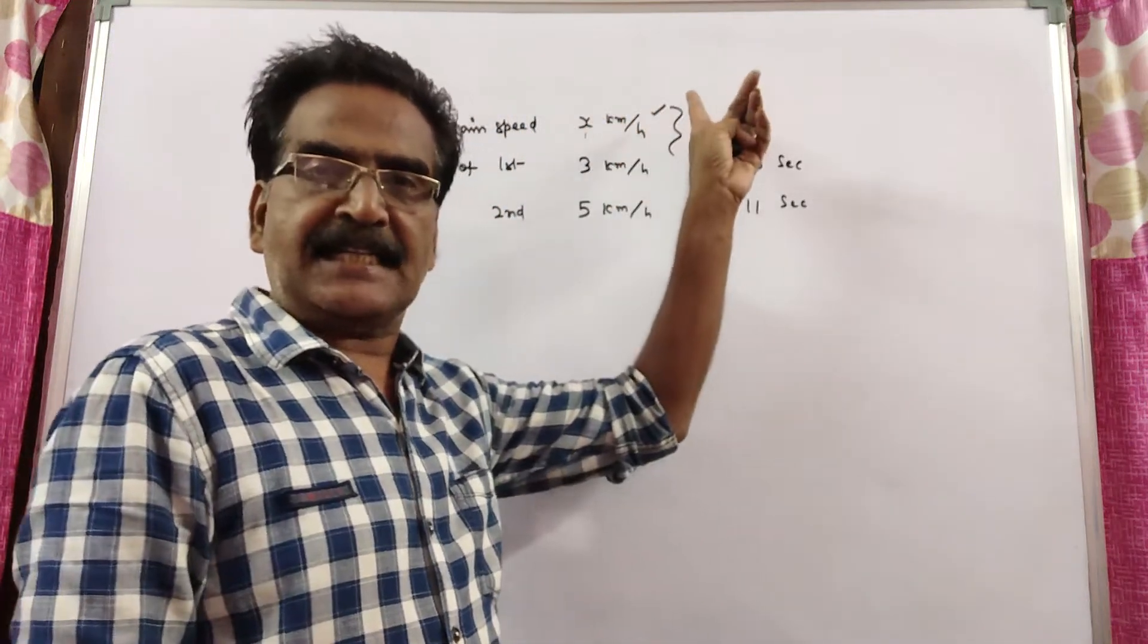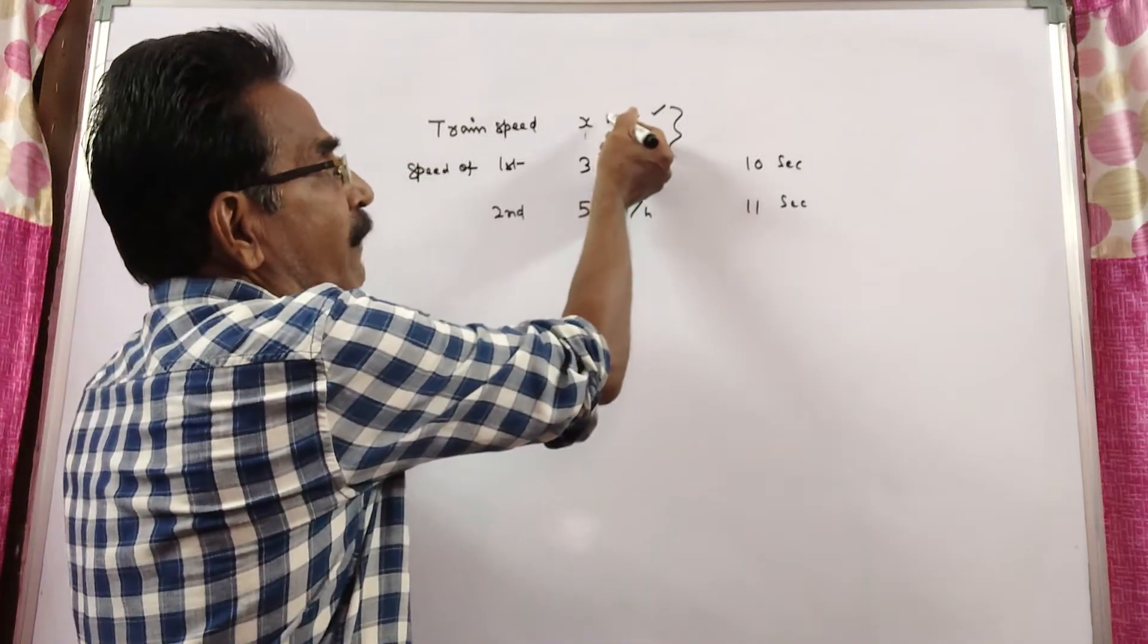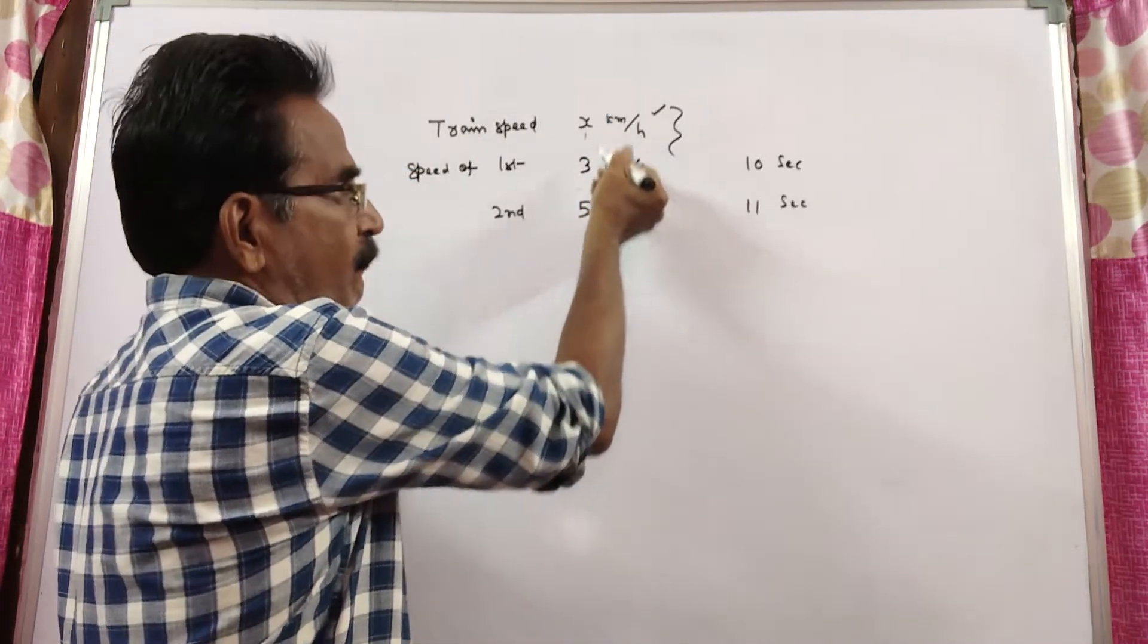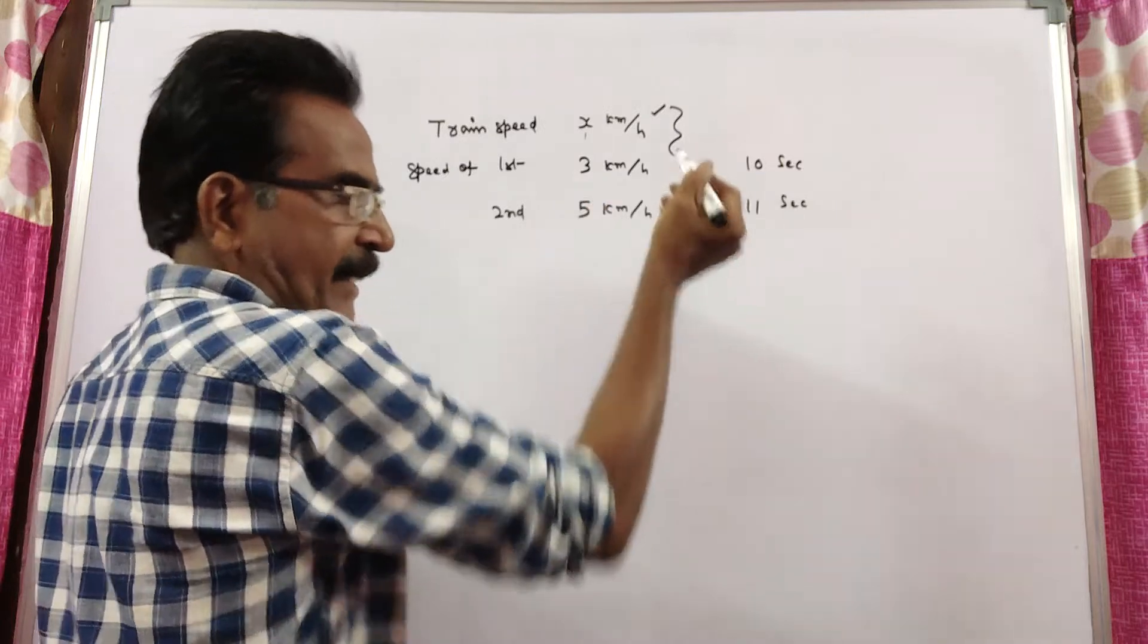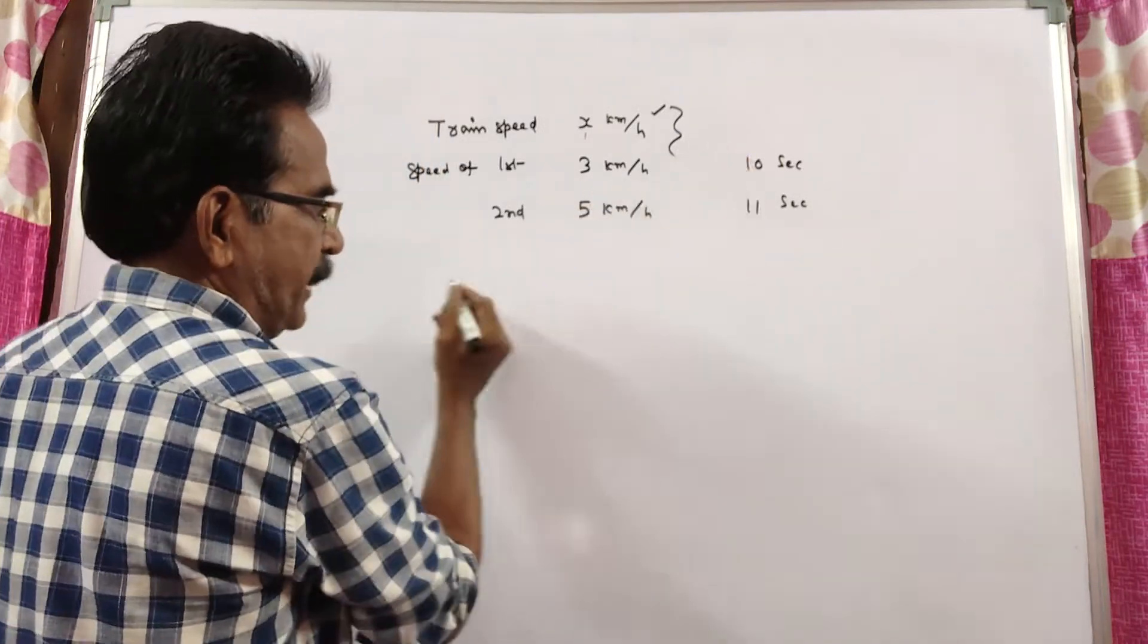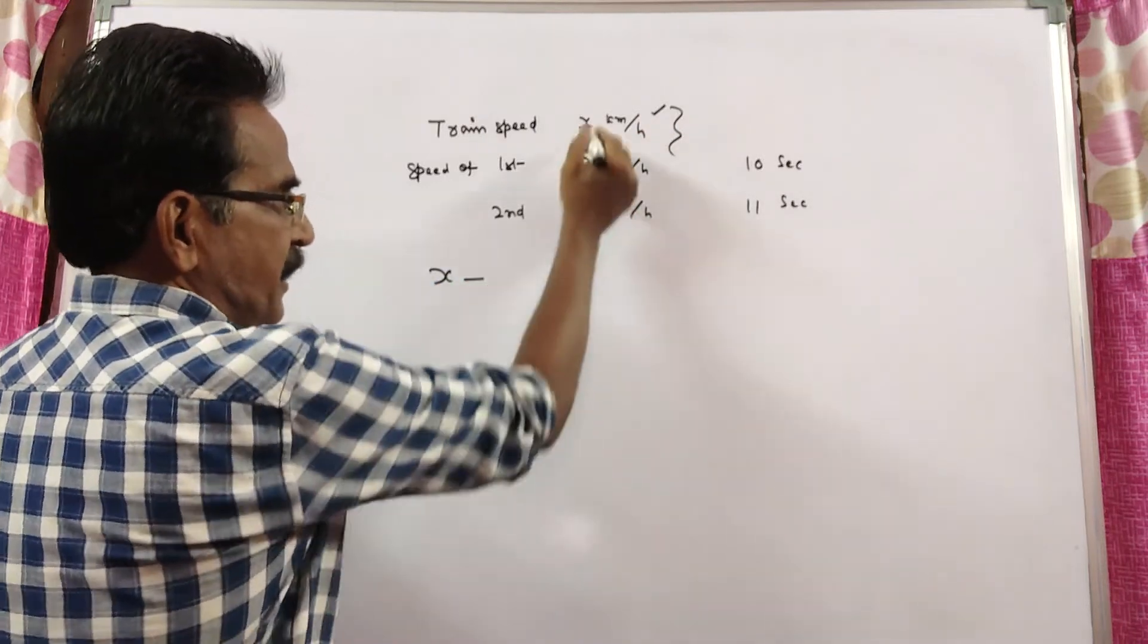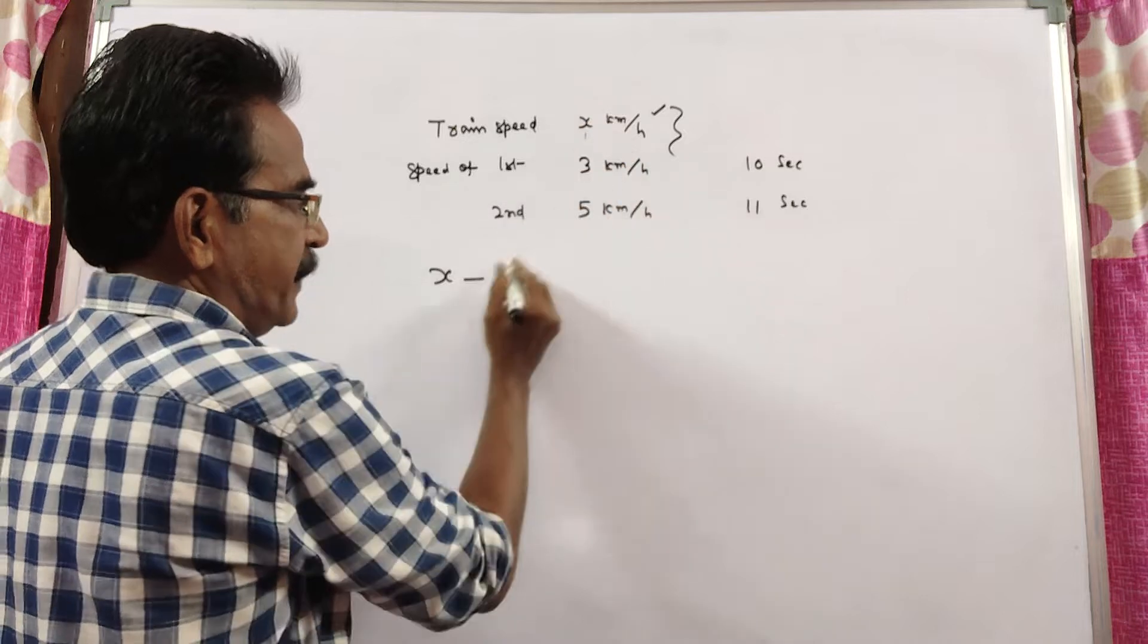Say the speed of the train is x kmph. While crossing the first man, the length of the train is equal to velocity into time. Of course, velocity - relative velocity, same direction - so x minus 3.